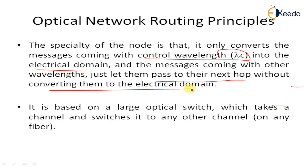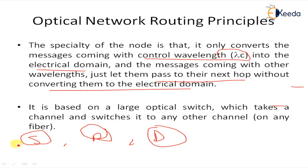The node passes data to the next hop without converting it into the electrical domain. It is based on a large optical switch which takes a channel and switches it to any other form or fiber, sometimes providing a multiplex mechanism and converting to the appropriate wavelength using a wavelength converter. The source sends packets to the particular node with a specific wavelength (lambda) and waits for a reply from the routing node, then sends the message with the selected wavelength and waits for an ACK from the destination.